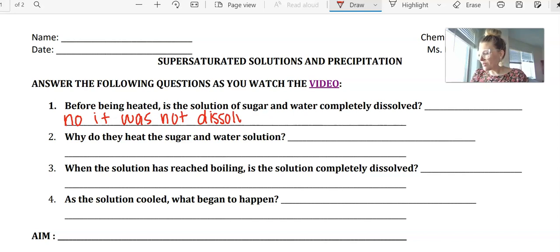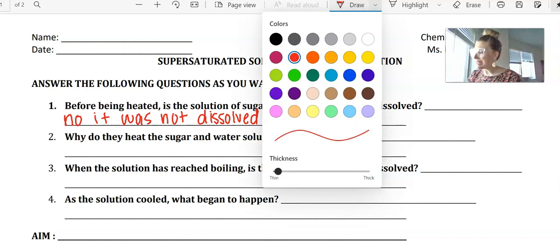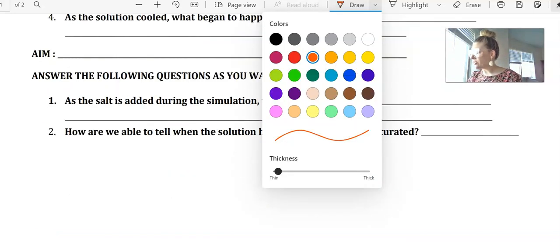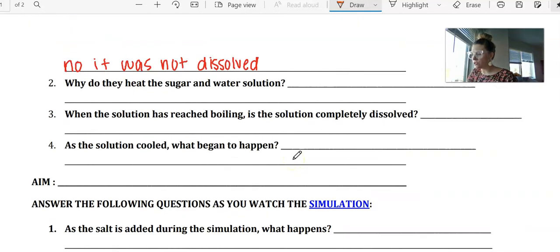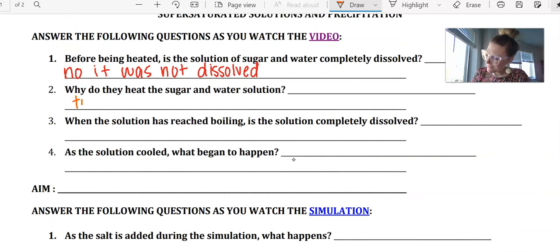Why did they have to heat the sugar and water solution then? What was the purpose of heating the sugar and water solution? Well, we had to make sure to heat it so that we could get all of that sugar to dissolve. So we wanted to get all of the sugar to dissolve.